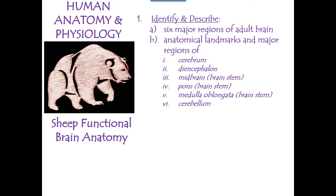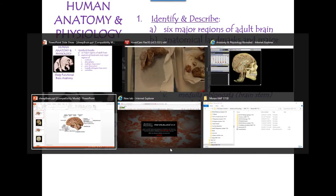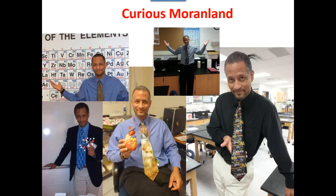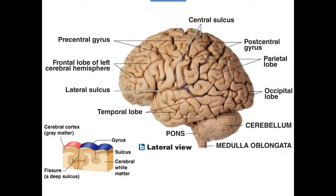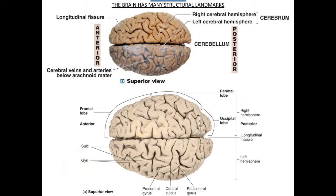We're going to cover some parts of the brain — not every part, since I have other videos for that — but we want to look at different views. We're quite familiar with identifying the lobes of the brain, the fissures, and the sulcus. We're going to use the PowerPoint, a live camera shot of the brains, and also another website.